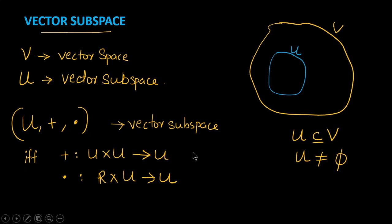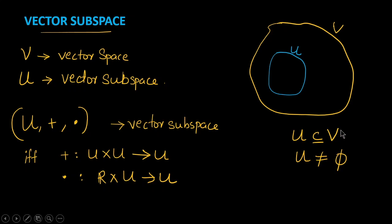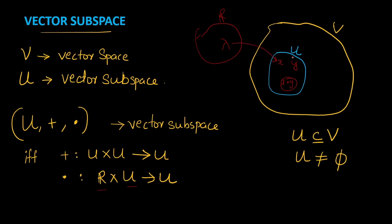That means when we add two elements of U it will give a result inside U itself. Suppose X and Y are two elements in U — when we add X and Y, the sum should also belong to U. The second condition is ℝ × U: we take some scalar lambda from the real numbers, and when we multiply lambda with an element X of U, the result should also belong to U itself — it should not be outside U.